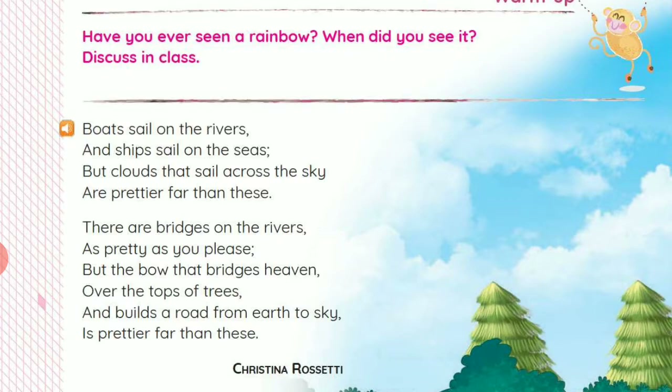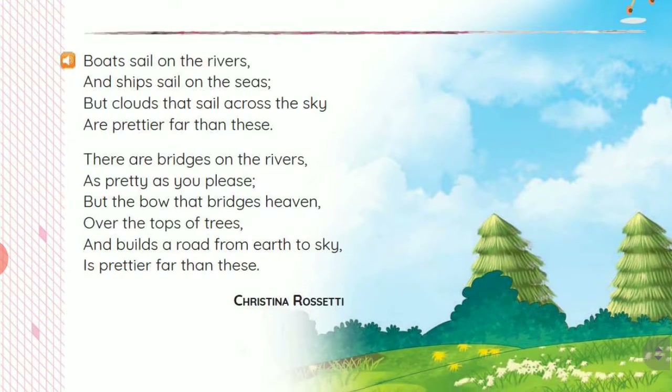Boats sail on the rivers — big boats sail there — and ships sail on the sea. But clouds — where do clouds sail? Clouds that sail across the sky — they sail in the sky. And the point is: boats that sail on the river look beautiful, ships also look nice, but what looks most beautiful of all? Clouds look most beautiful, don't they — which sail across the sky.